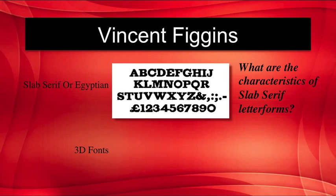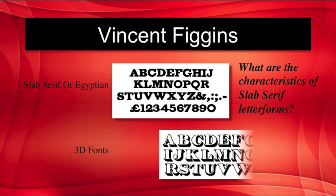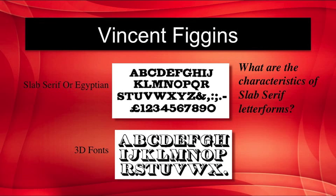In 1812, his printing specimens showed a full range of modern styles, including Egyptians, or slab serif, and three-dimensional fonts. I want you to be able to tell me what are the characteristics of slab serif, or Egyptian, letterforms.